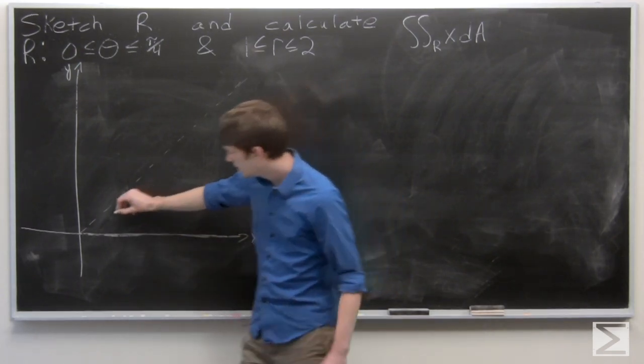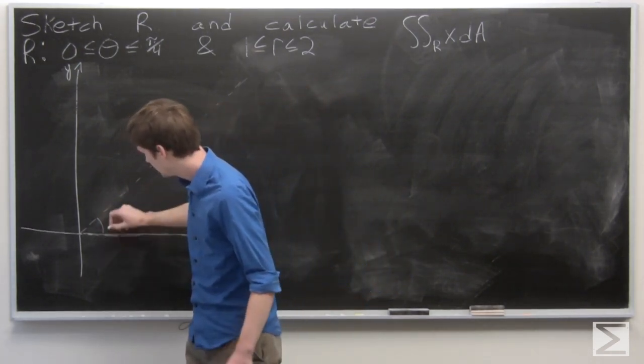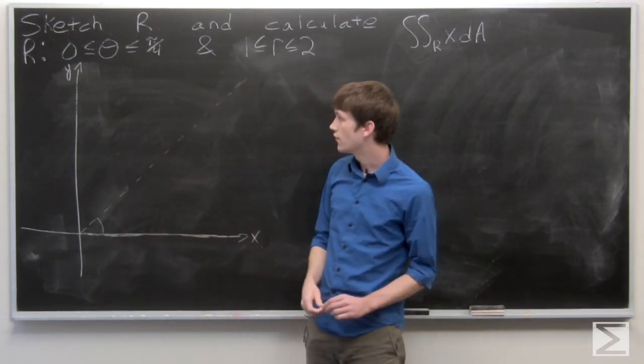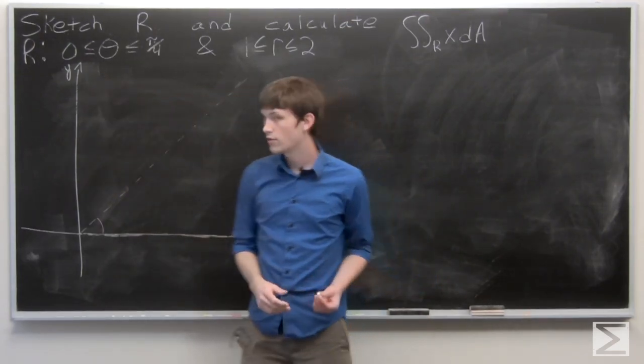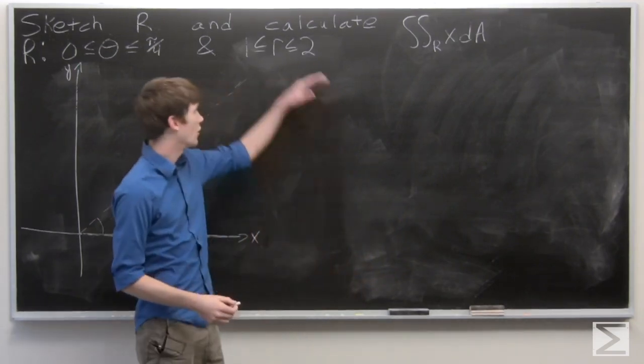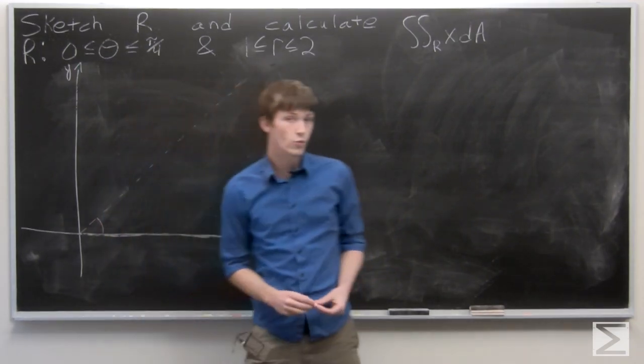So we're between these two, bounded by theta, so we're in this whole region. Now we're looking at our bounds for R, and that's between 1 and 2.